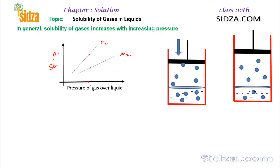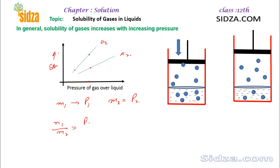That means the solubility of a gas also depends on the nature of the gas. When we say nature of a gas, it actually depends on the ease of liquefaction. The gases which you can easily liquefy are more soluble. So here, oxygen gas is more easily liquefiable, meaning you can convert oxygen gas into liquid state much easier than nitrogen. If M1 is the mass or solubility of the gas at pressure P1, for the same gas you can find the solubility at another pressure P2 by the equation: M1/M2 = P1/P2.